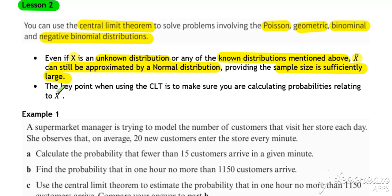The key point when using the central limit theorem is to make sure you're calculating probabilities relating to X bar. If you're ever calculating probabilities or doing hypotheses testing relating to X bar, then you may use the central limit theorem to get the distribution of X bar to approximate to a normal. And X bar will always be used in the context of a normal distribution, not one of the others.